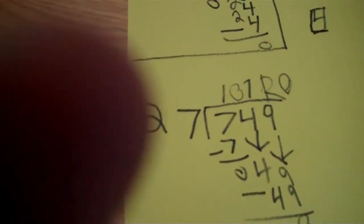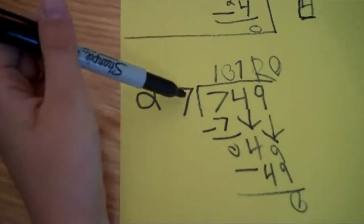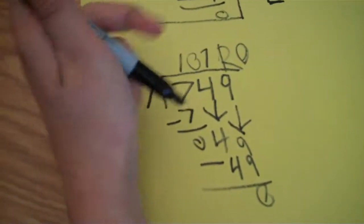Okay, this is question number 2 for page 106. They ask you, 7 divided by 749.